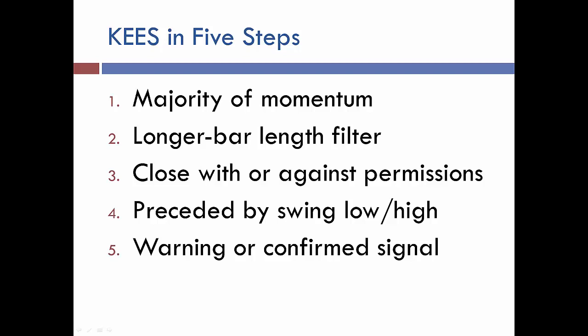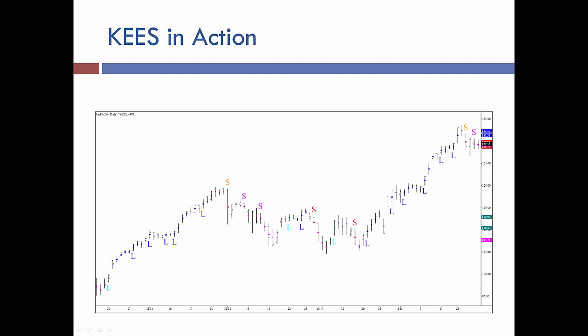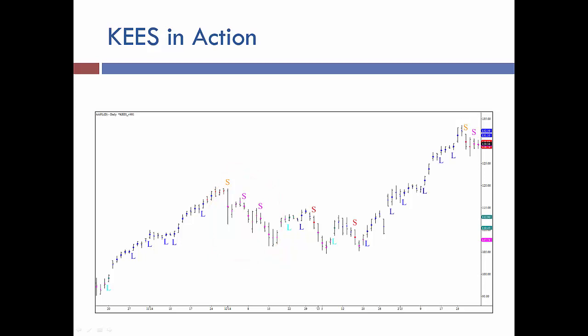Finally, based upon the signals that are being plotted, KEYS also identifies warning signals and confirmed signals. The difference being a warning signal might give an indication that you may want to start thinking about getting into the market in a certain direction, versus a confirmed signal, which tells you that it is a strong signal to get in long or short. On this chart of Apple, the blue colored dots are permissioned long and the red or magenta colored dots are permissioned short, with L's for long signals and S's for short signals.